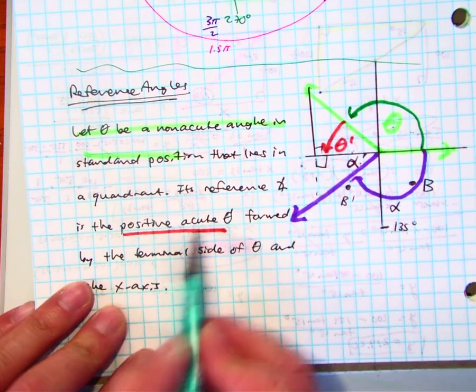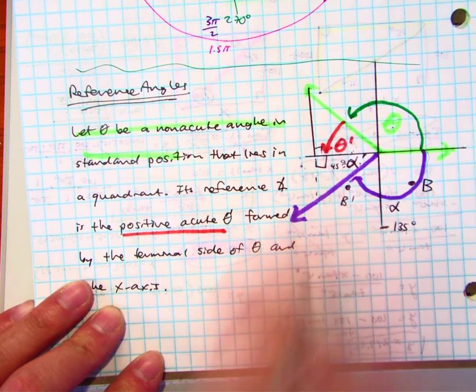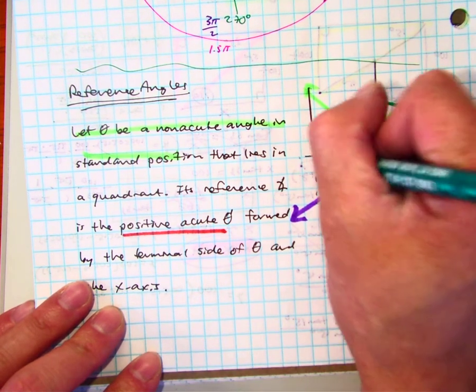But here it says it has to be positive and acute, so you would make the reference angle 45 degrees. And then you can kind of see the bow tie.